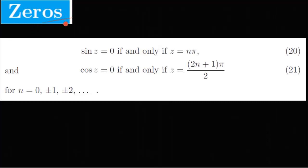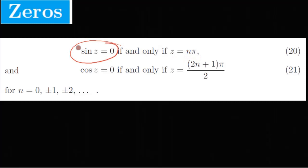This is the zeros of a complex function. We have to discuss the trigonometric functions — what are the zeros? What is the sine function? If the zeros is equal to zero, what is the real case? We have to discuss the complex case. z equal to nπ gives sin(z) = 0.